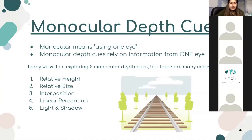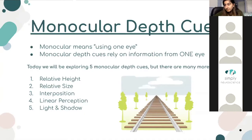Moving on to monocular depth cues, as a student mentioned. The prefix 'bi' means two, so 'mono' means one. A monocular depth cue means using one eye versus two. Monocular depth cues rely on information from only one eye. Today we'll be exploring five monocular depth cues — some of the most prominent ones — and those five are: relative height, relative size, interposition, linear perspective, and light and shadow.